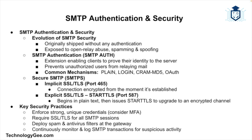Then there's Secure SMTP (SMTPS), which involves using SSL/TLS to encrypt SMTP connections, ensuring that email content and credentials are protected during transmission. This can be achieved using two methods: implicit SSL/TLS, which is SMTP over SSL/TLS typically on port 465, and explicit SSL/TLS or STARTTLS, which upgrades an existing plain-text connection to an encrypted one using the STARTTLS command, typically on port 587.